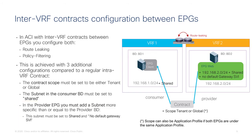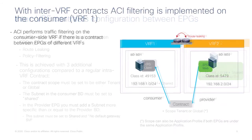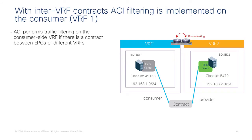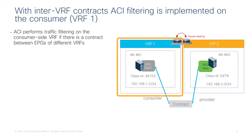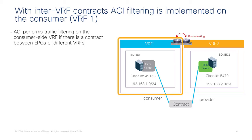This explains why there is a need to enter a subnet under the provider-side EPG. ACI optimizes traffic filtering for EPG-to-EPG contracts to occur on the consumer-side VRF. What needs to happen is that ACI programs information about VRF2 into VRF1. The way that information is provided is by the administrator entering which IP address range is under a given EPG on the provider side, which is then programmed into the consumer-side VRF.